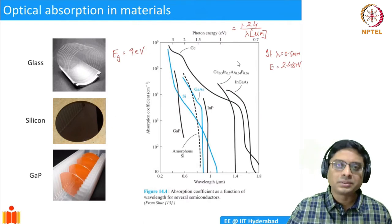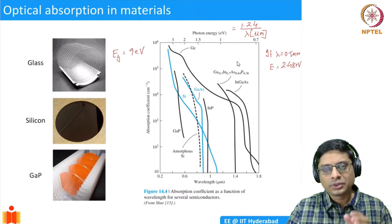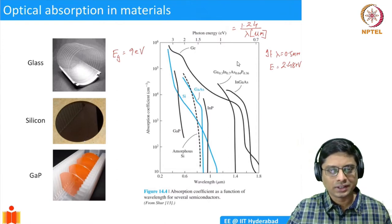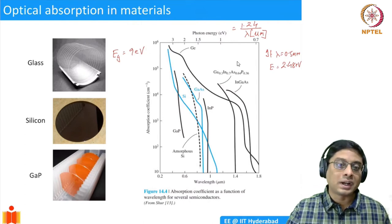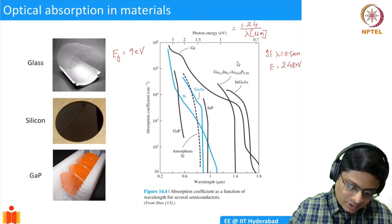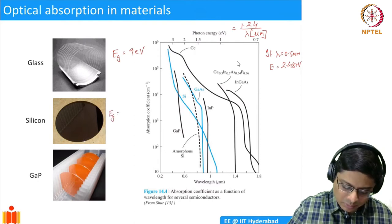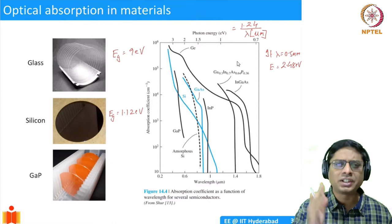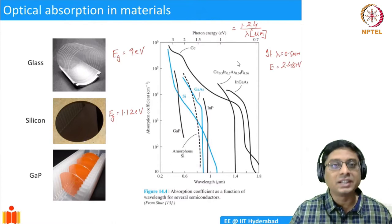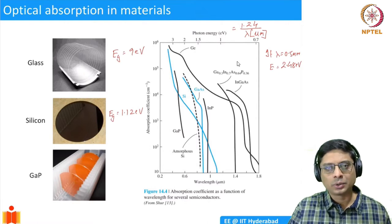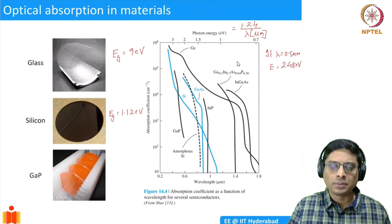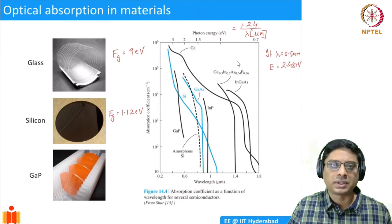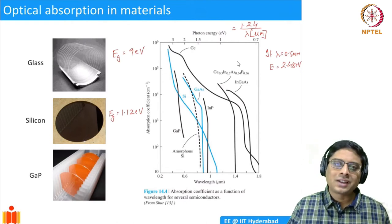The visible range of radiation is from 300 to 700 nm. Any photon in this range incident on glass gets transmitted — that is why glass is transparent. The same analysis explains why silicon is not transparent. Silicon's band gap is 1.12 eV, so a 500 nm visible photon with 2.48 eV energy is well above the band gap and gets absorbed. That is why silicon is opaque.